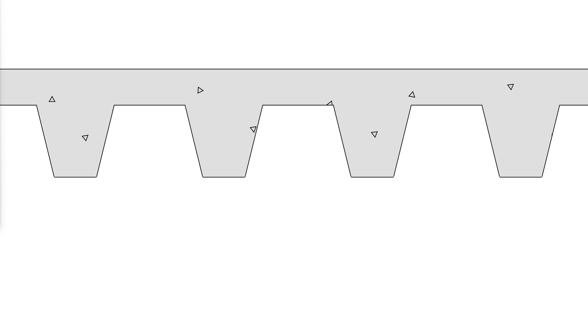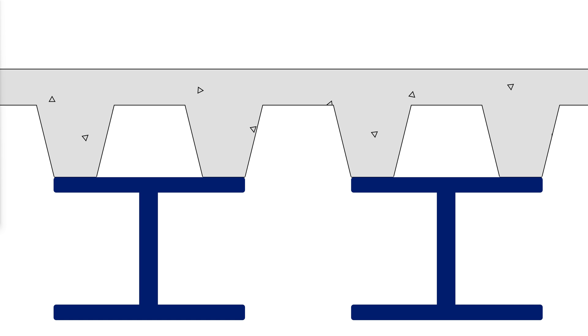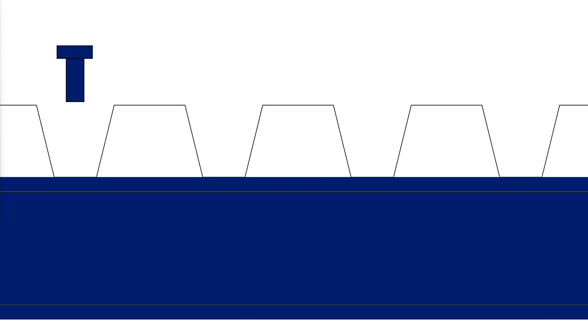The deck can be used with its ribs oriented either parallel or perpendicular to the beams. In the usual floor system, the ribs will be perpendicular to the floor beams and parallel to the supporting girders. The studs are welded to the beams from above, through the deck.